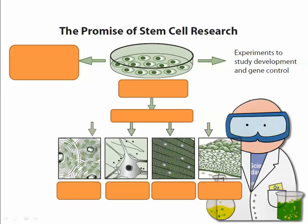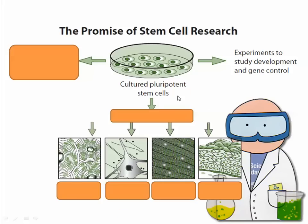Experiments also study development and gene control — basically looking at how cells combine together and interact to turn into tissues, and how you take a stem cell and trick it into turning into specialized tissue. This is gene regulation, because a cell actually has all the genes in there, but by turning certain ones on and off, you can end up with specialized cells.